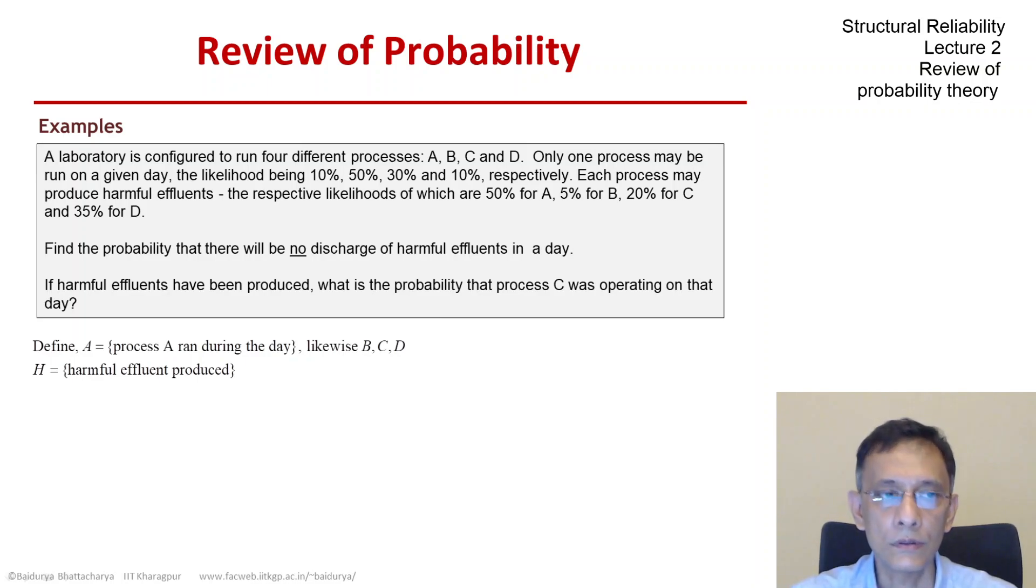This is another important event H which is harmful effluents were produced. So if we now interpret the probability numbers we would assign in this way.